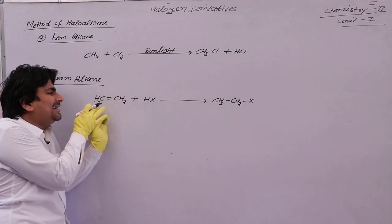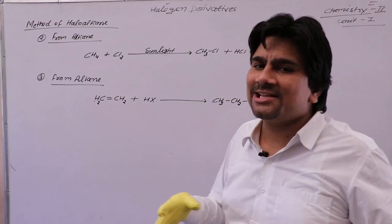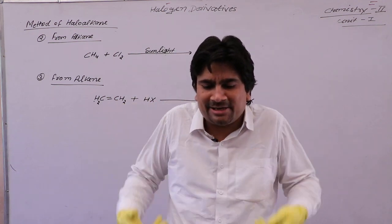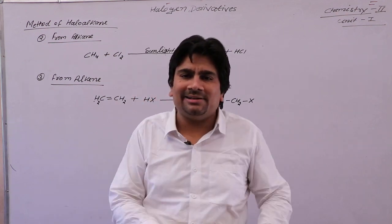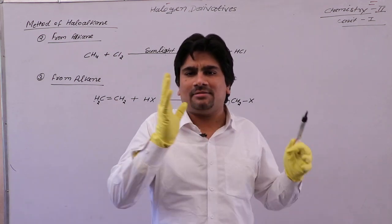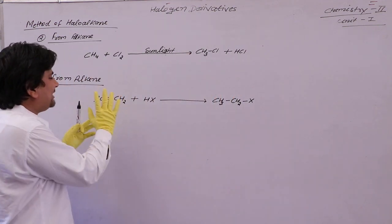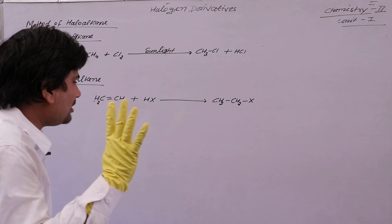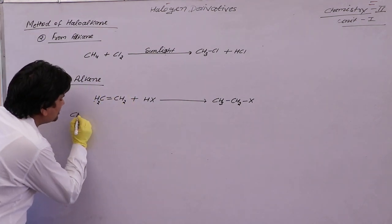On this double bond, there are 2 hydrogens on one side and 2 on the other — that is a symmetrical alkene. Now if we take an asymmetrical alkene — on one side of the double bond there is one carbon and on the other side there is also one carbon, but one side has 2 hydrogens and the other has 1. In a symmetrical alkene, both sides of the double bond have equal hydrogens.